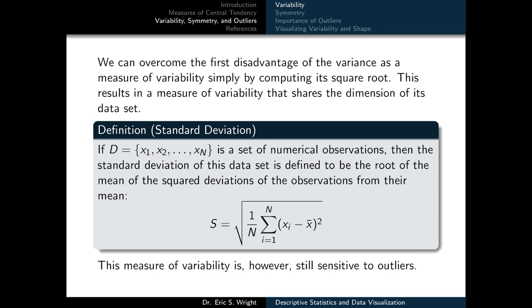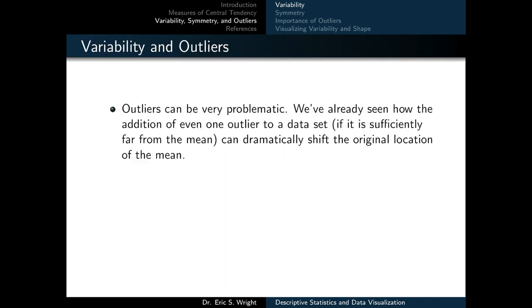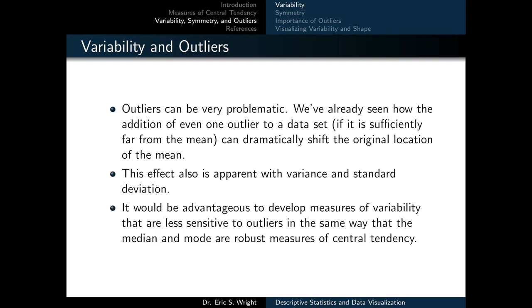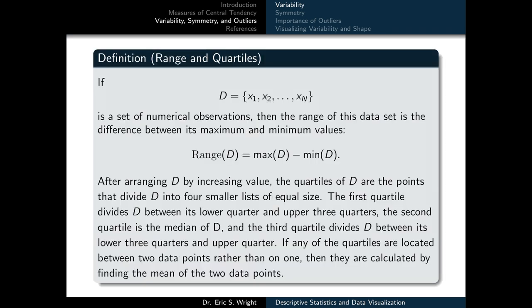It is worth being aware that, like the variance, the standard deviation is still sensitive to outliers within the dataset. Outliers can be very problematic — even one outlier sufficiently far from the mean can dramatically shift the location of the mean, and this effect is also apparent with variance and standard deviation. As a result, it would be advantageous to develop measures of variability less sensitive to outliers, in the same way that the median and mode are robust measures of central tendency. We'll define the range and the quartiles of a dataset.